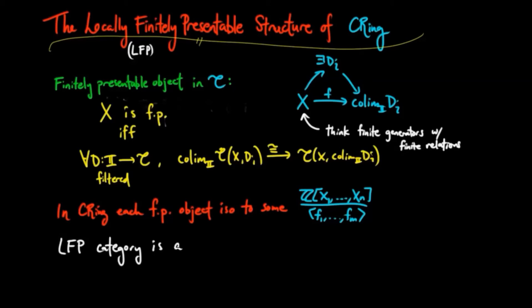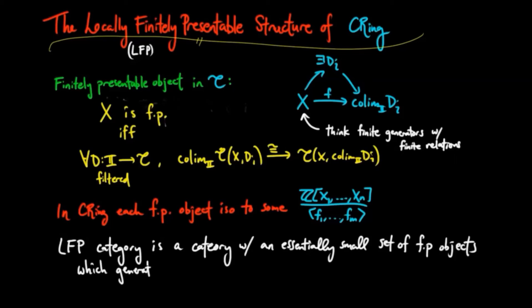Let's recall that a locally finitely presentable category is a co-complete category with an essentially small set of finitely presentable objects, which generate each object under canonical filtered co-limits.